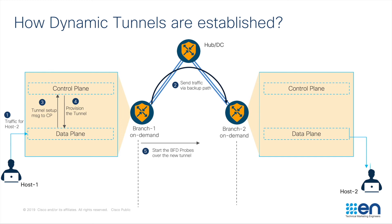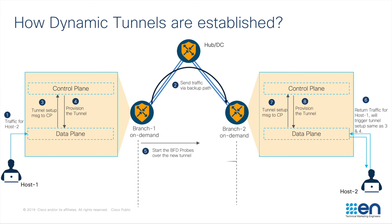The other side, which is branch 2, triggers the tunnel formation process only when some data traffic is received on the branch 2 edge router, which is the return traffic from host 2. As noticed in step 3 and step 4, the same process is followed in step 7 and step 8, where the tunnel setup message is sent from data plane to control plane on branch 2, and the control plane will respond to data plane and direct it to provision a tunnel towards branch 1. Now BFD probes will be sent from branch 2 towards branch 1.